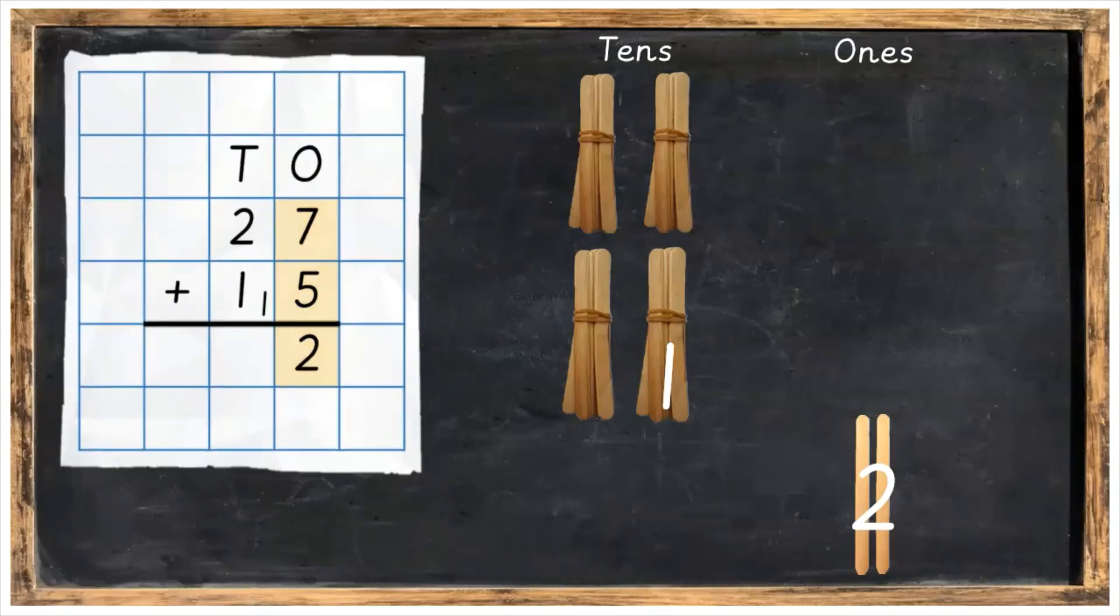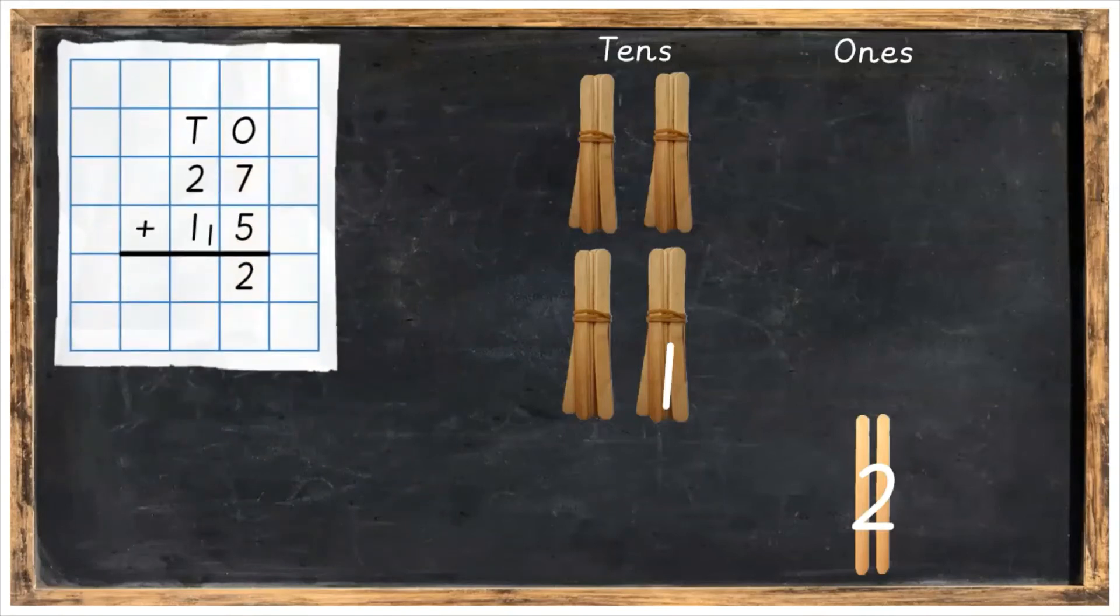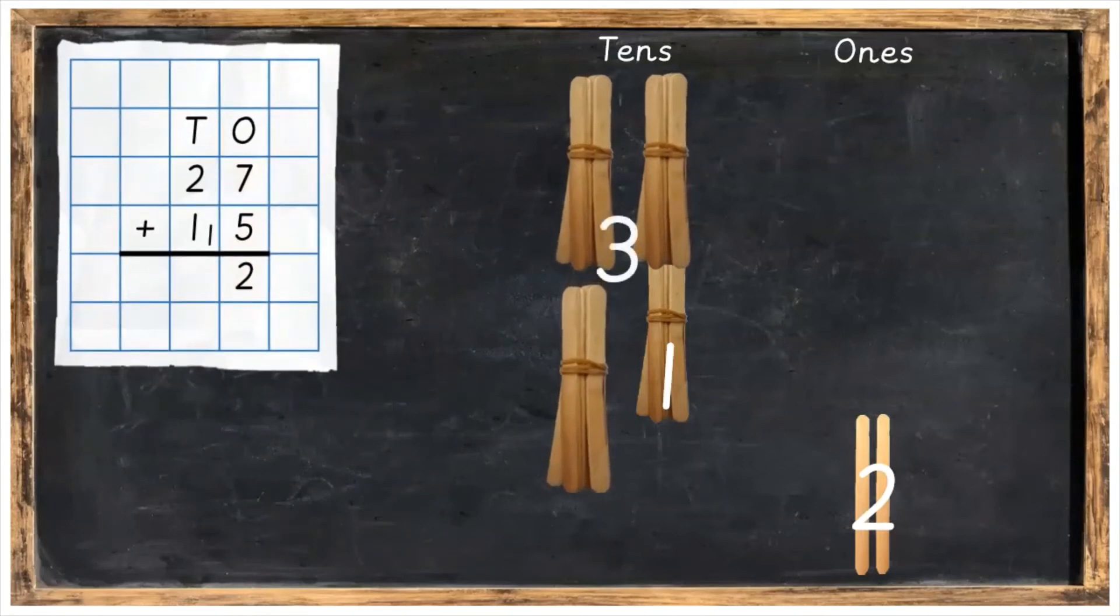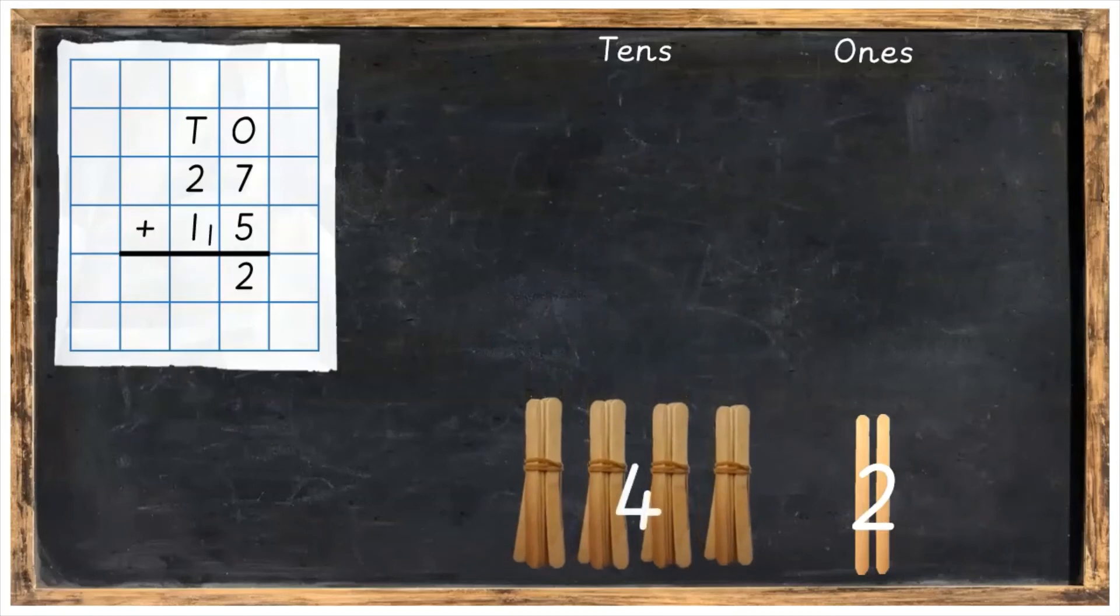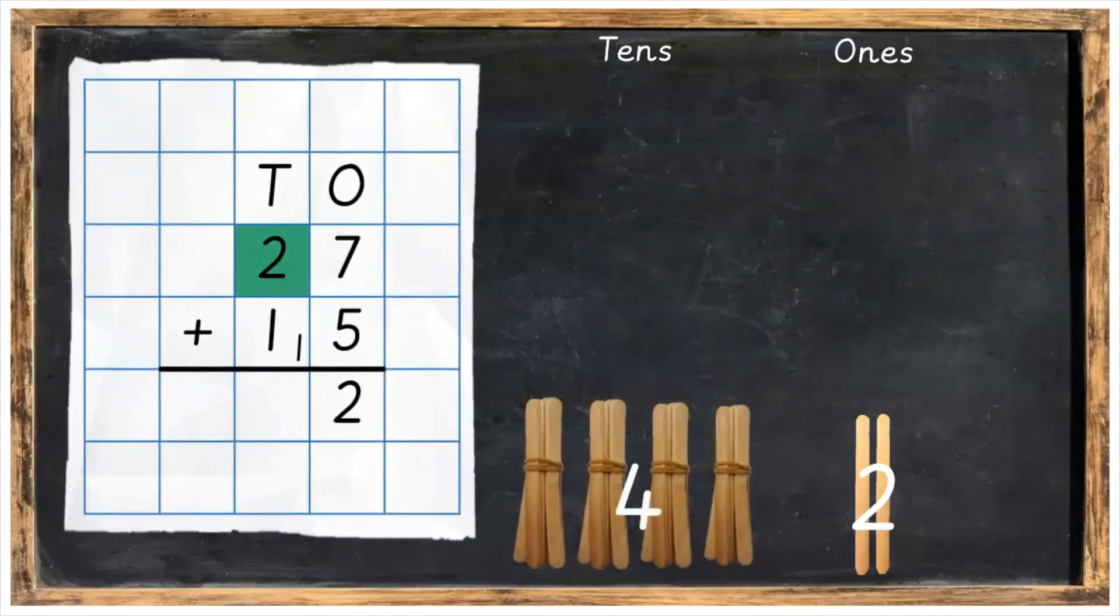Great work! We're now going to add the tens. So we have our three tens here, plus the one ten that we brought over, which all together will give us four tens. Looking back at our sum, we've got our two tens on top and the one ten on the bottom, plus the one we brought over, which again gives us four.